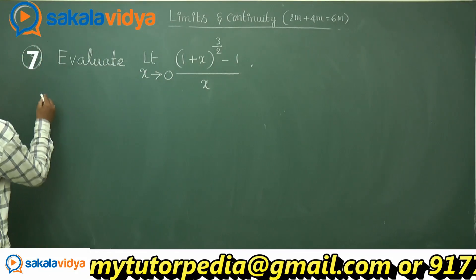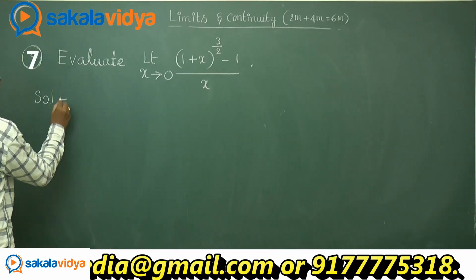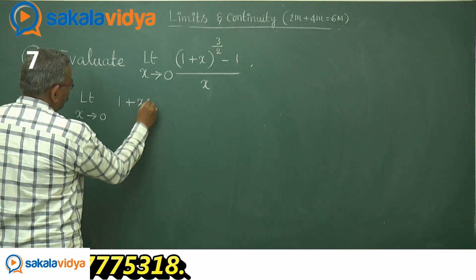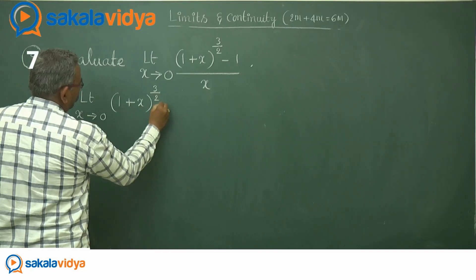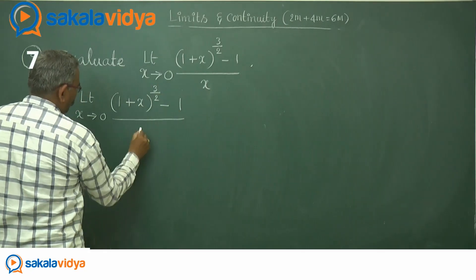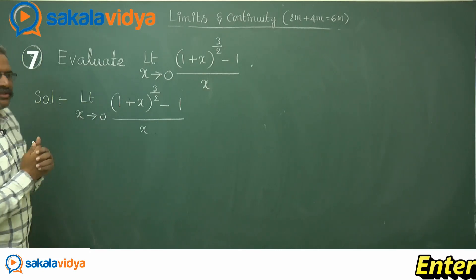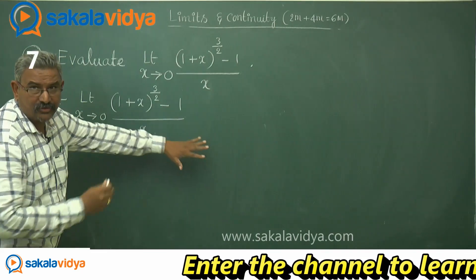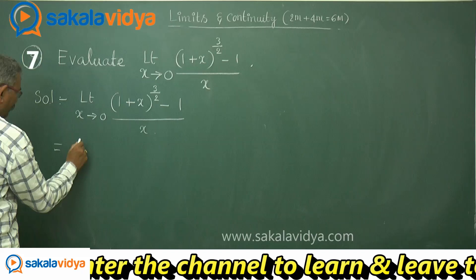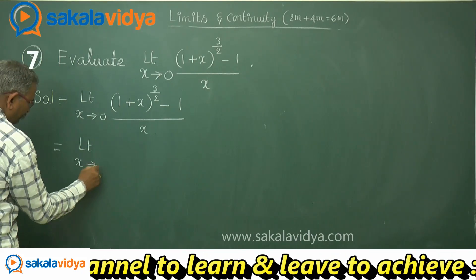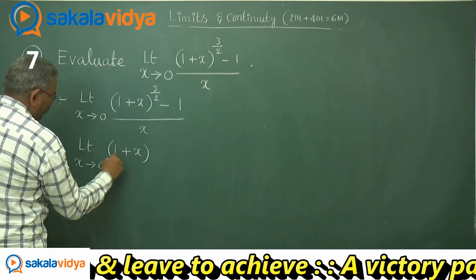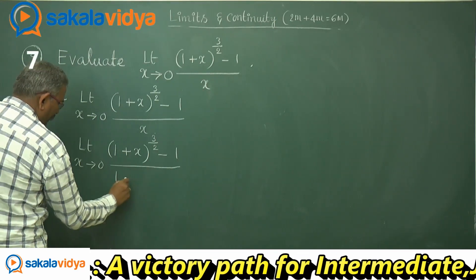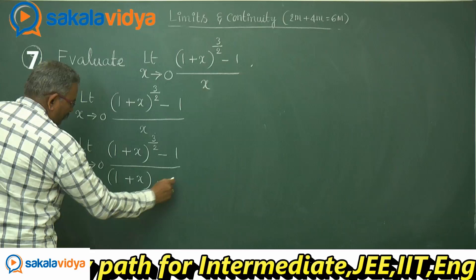Let us solve it now. Limit x tends to 0, (1+x)^(3/2) minus 1 upon x. Let us change the denominator — in the denominator, add 1 and subtract 1. So we can write: limit x tends to 0, (1+x)^(3/2) minus 1 divided by (1+x) minus 1. It makes no difference.